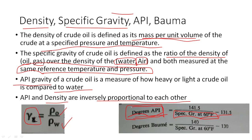What does inversely proportional mean here? If your crude oil has a higher specific gravity, then your API gravity will be low. If the specific gravity of a crude oil is very low, then the degrees of API will be very high. The Baumé series gives you the same parameter — how heavy or light the crude oil is.